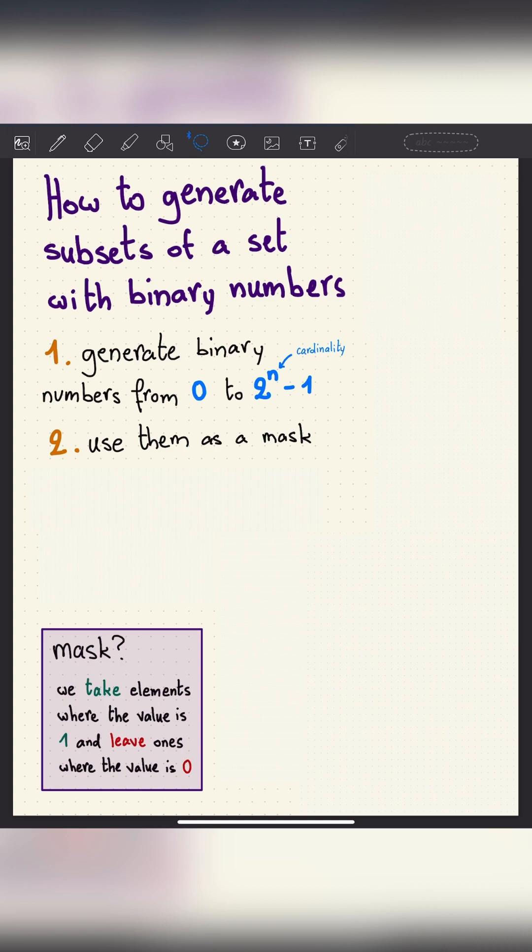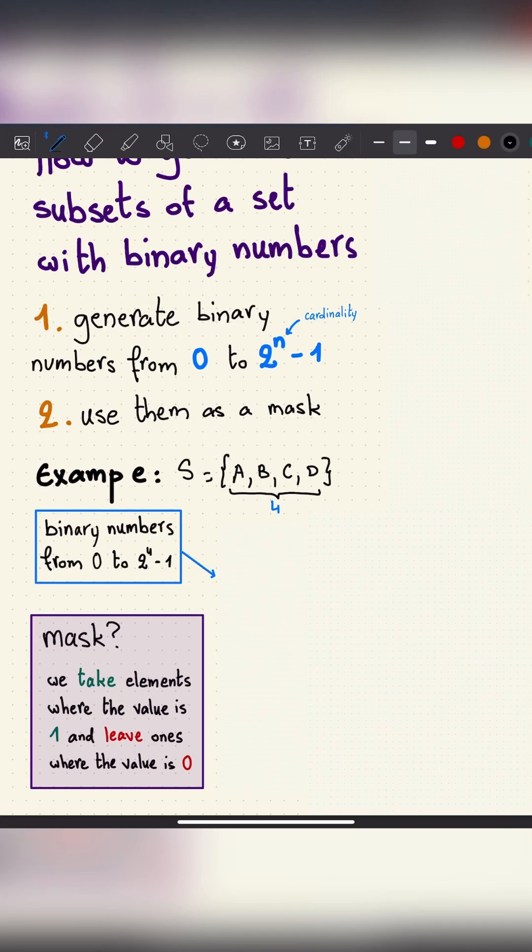as a mask. A mask is where we take elements where the value is 1 and leave ones where the value is 0. Let's take this example: we have the set {A, B, C, D}. N is 4, so we